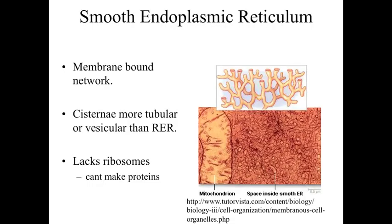We talked about the rough endoplasmic reticulum in the previous lecture — it is a membrane-bound network with a rough appearance because of ribosomes on the surface. A similar system is found in the smooth endoplasmic reticulum, which is also a membrane-bound network, but it has a smooth appearance because it lacks ribosomes and therefore cannot make proteins.